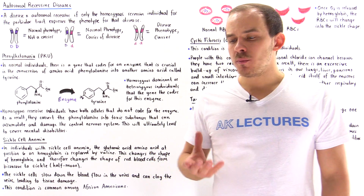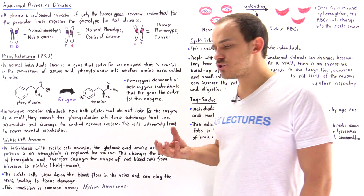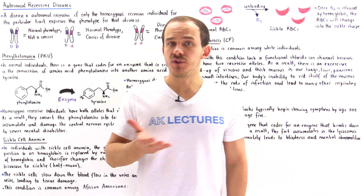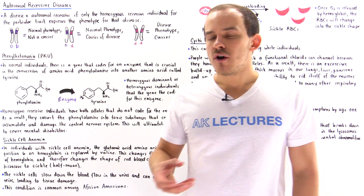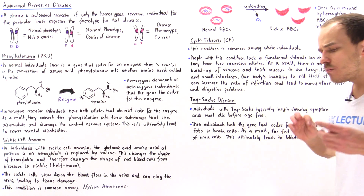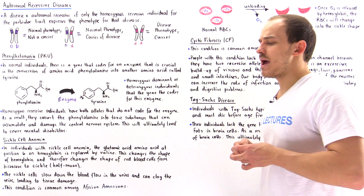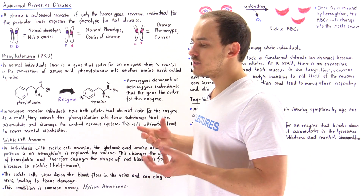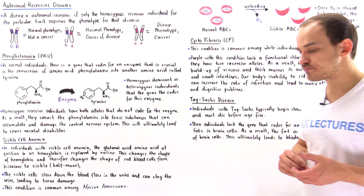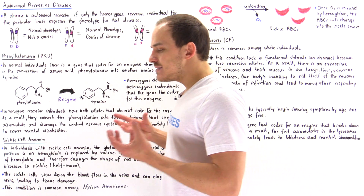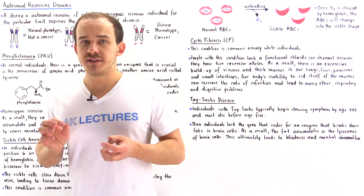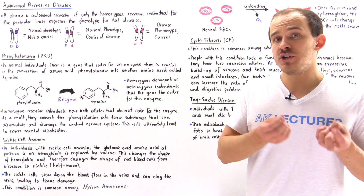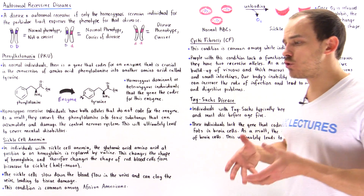As you might already know, a chromosome is nothing more than a collection of many different types of genes. And a gene is nothing more than a sequence of nucleotides that codes for some specific protein. Proteins are very important macromolecules; they're used by the cells of our body for many different types of processes and reactions. There are many examples of diseases that are a result of abnormalities on either the genes of the chromosomes or the chromosomes themselves.